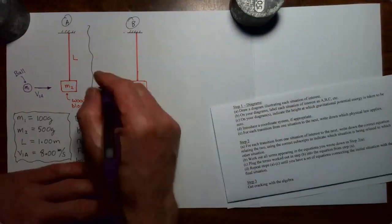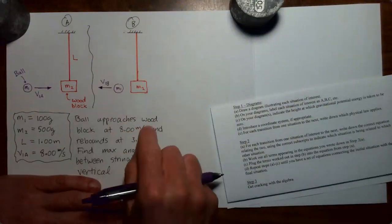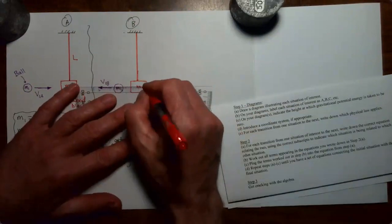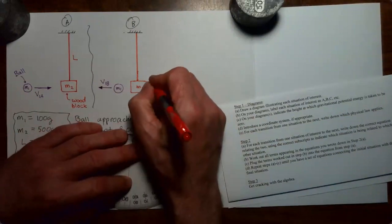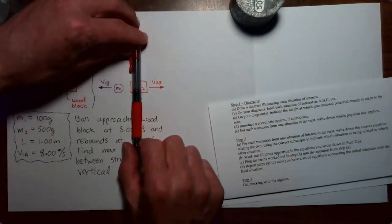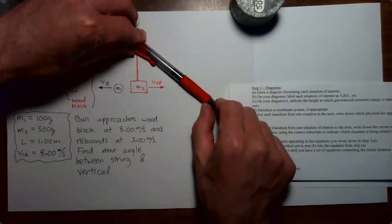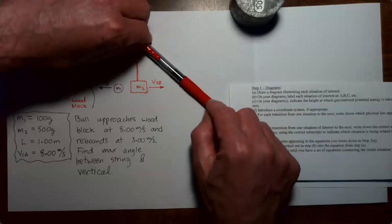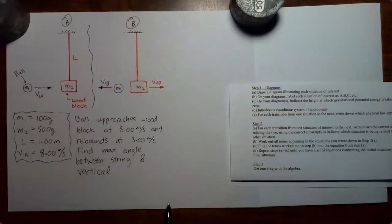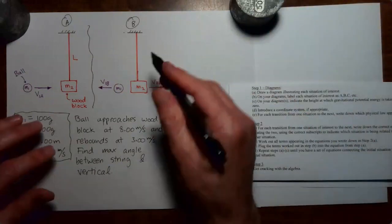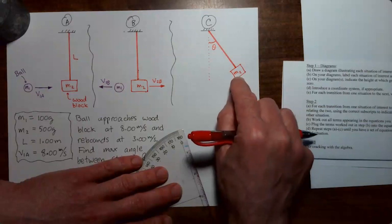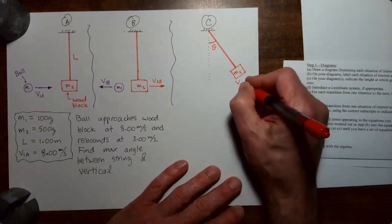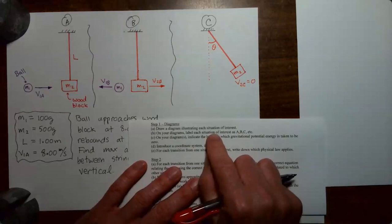The velocity of mass 1 in situation B would be V1B. Because mass 2 just took a hit, mass 2 is going to be moving to the right — let's call the velocity of mass 2 in this situation V2B. After this, mass 2 is going to swing upward at the end of its string. We go to a third moment of interest, C, where mass 2 has reached its greatest height just before it begins to come back down. When mass 2 is at the maximum height, the string makes angle theta with the vertical, and in this situation the velocity of mass 2 is zero.